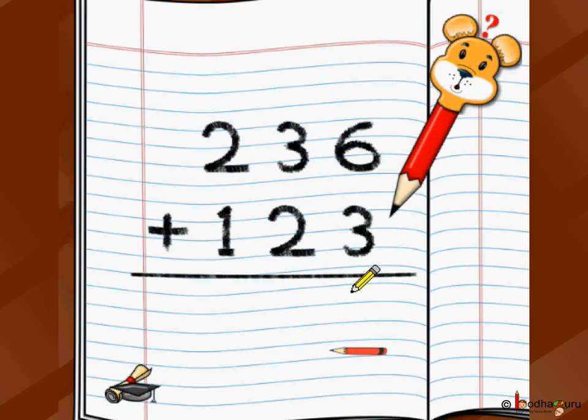So 236 plus 123 equals, and we underline. How much does it become? Then you start doing position by position. You start from ones position, that is from the rightmost position. You first add individual digits, then you go to the tens position, then you go to the hundreds position. That is, you are going from right to left, or from ones position to tens position to hundreds position.